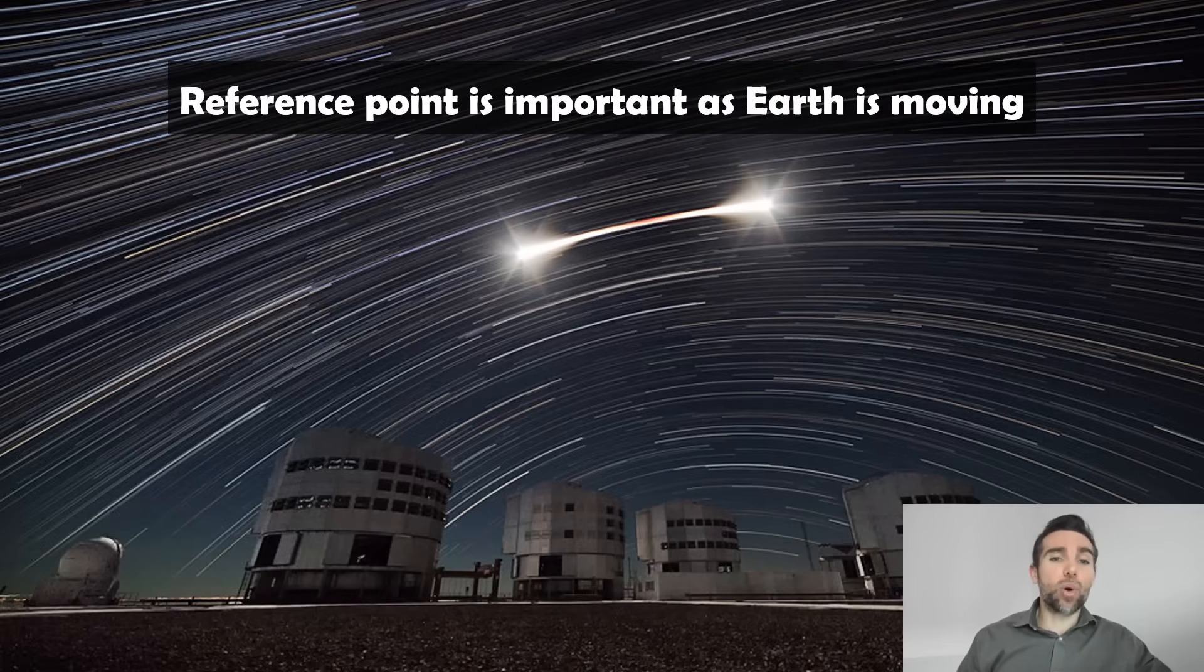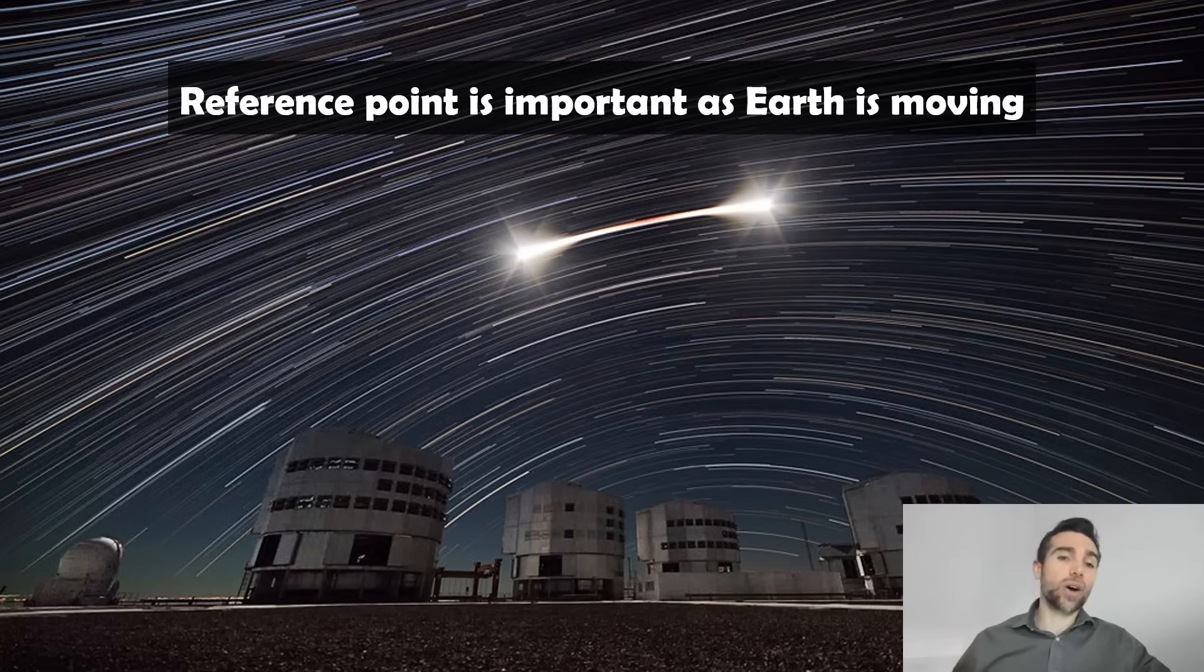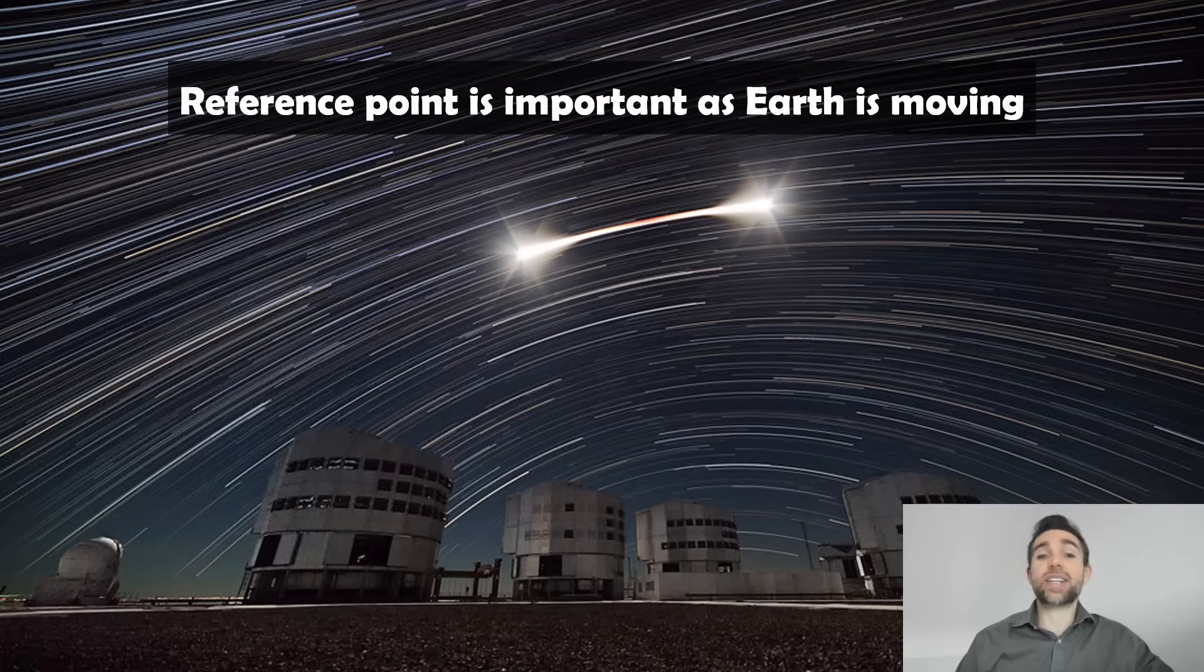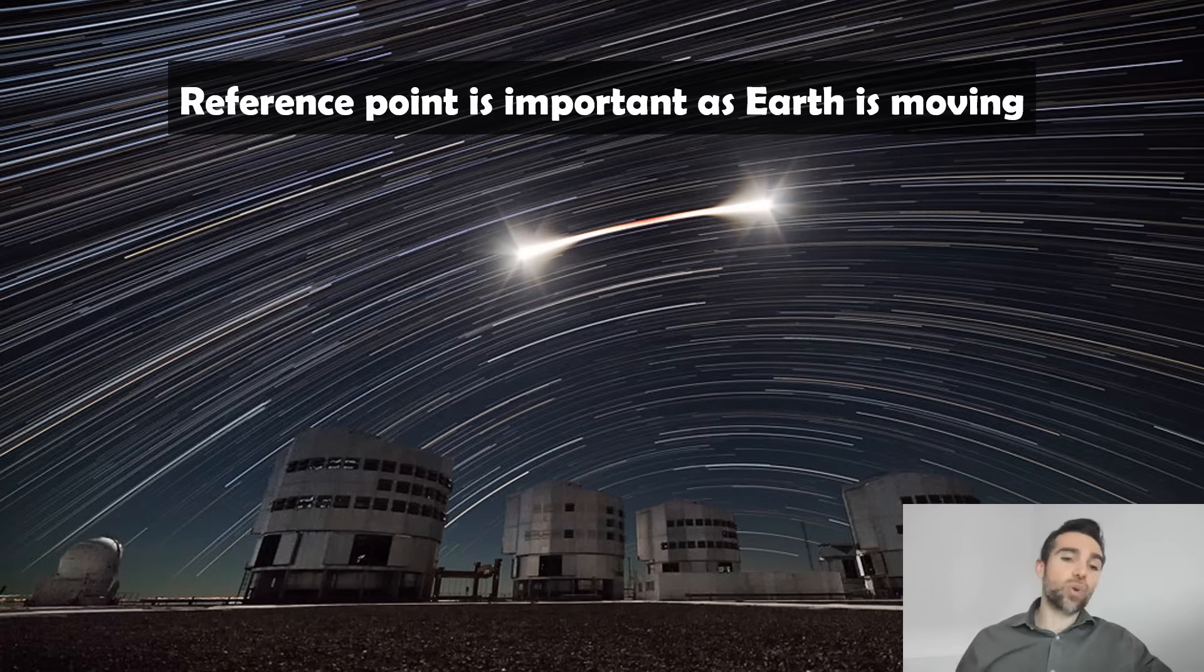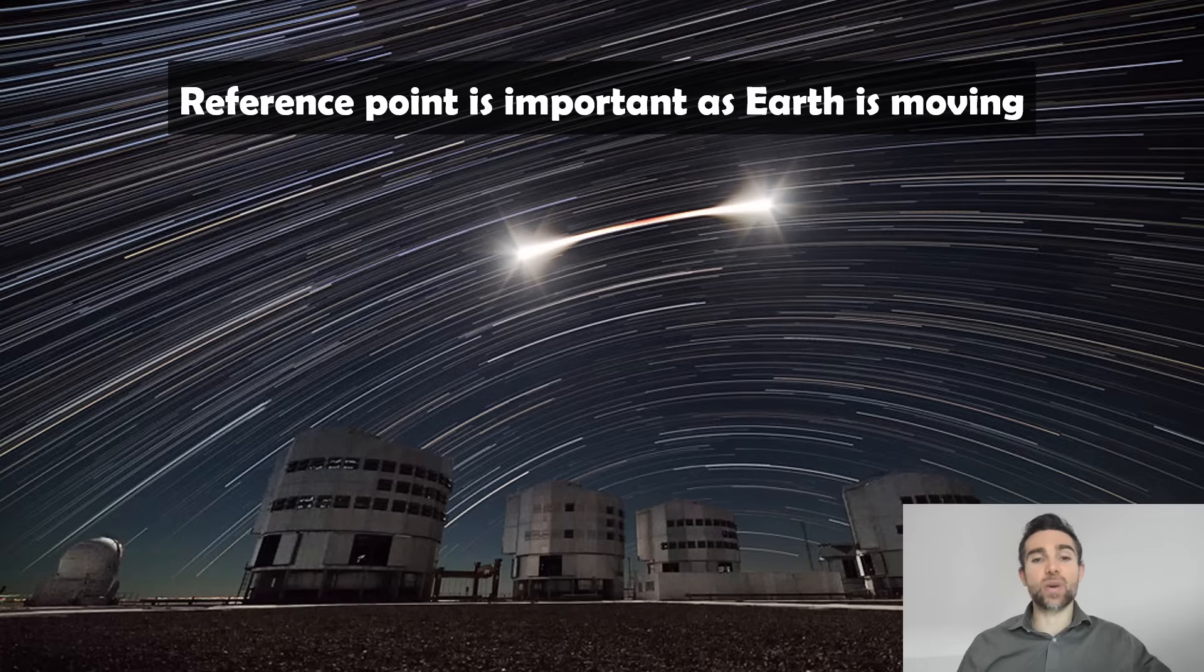They're very important because Earth is moving. Earth is obviously orbiting the sun and also spinning, so our night sky is constantly changing. It changes as the Earth rotates, so all those stars will move around, but also throughout the year the stars and constellations will change from night to night.